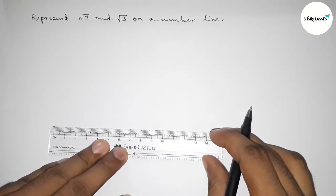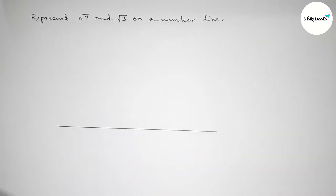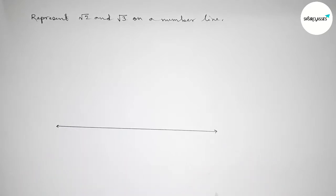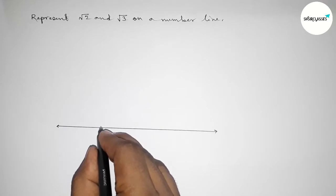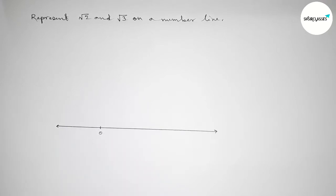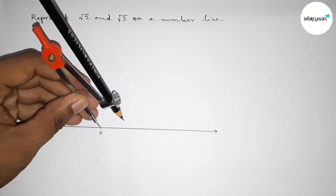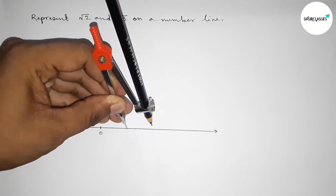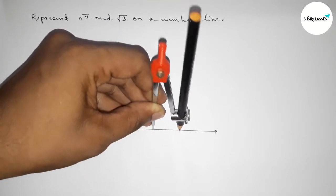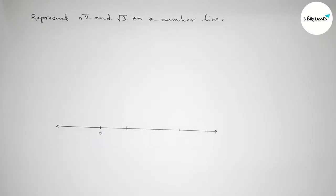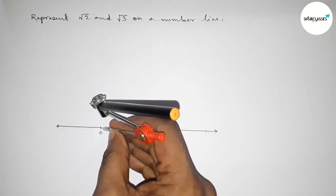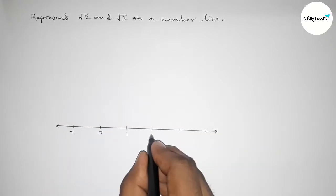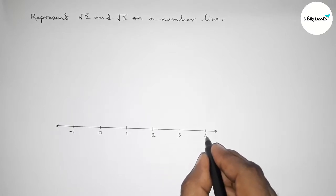First, we have to draw a number line. Taking a line of any length and marking arrows on both sides. Now taking the number zero, and by using compass, marking the numbers on the line with a length of one unit each. Marking minus one on this side, then one, two, three, four, and continuing.